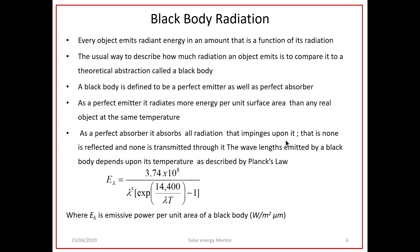A black body is defined as a perfect emitter as well as a perfect absorber. As a perfect emitter, it radiates more energy per unit surface area than any real object at the same temperature. As a perfect absorber, it absorbs all radiation that impinges on it — none is reflected and none is transmitted. The wavelength emitted by a black body depends upon its temperature as described by Planck's law.